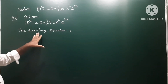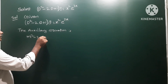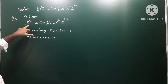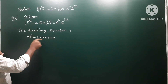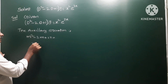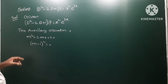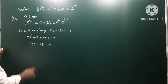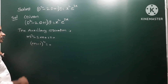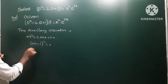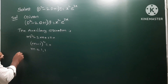For the complementary function, we write the auxiliary equation. The differential operator is D² - 2D + 1, so the auxiliary equation is m² - 2m + 1 = 0. Instead of D we take m. This can be factorized as (m - 1)² = 0, using the formula (a - b)² = a² - 2ab + b². Therefore m = 1, 1 — two equal roots.